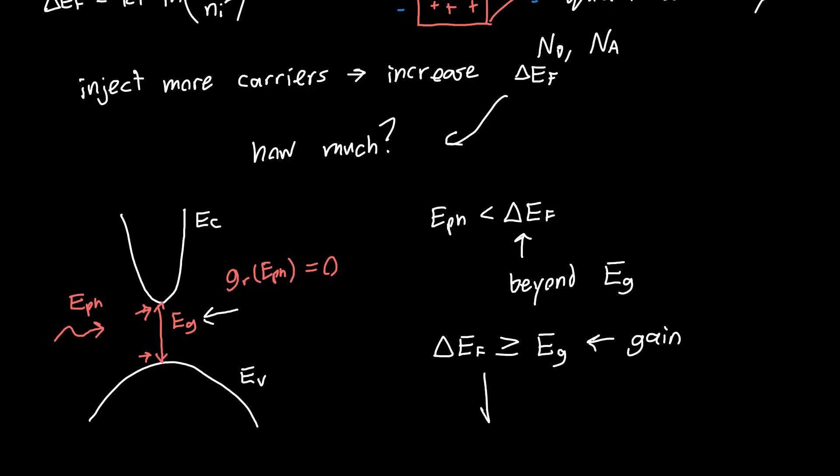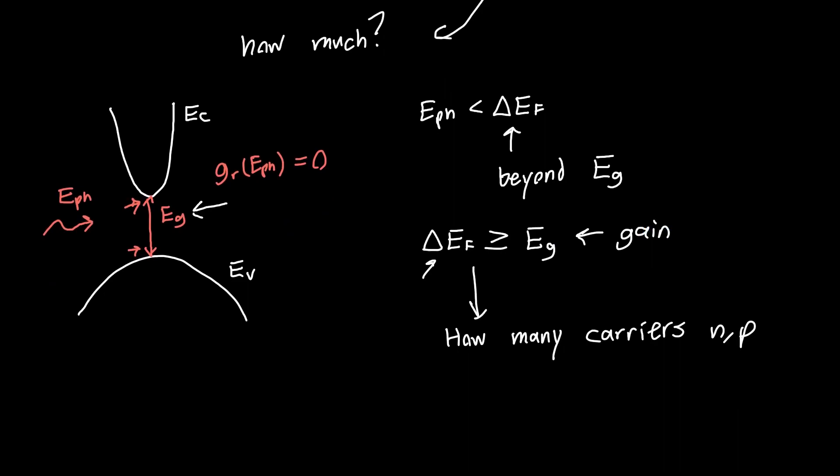And so now the question becomes, how many carriers does that require? So how many carriers N or P do we have to inject in order to achieve this condition? Delta EF has to be greater than or equal to EG. Or let's say at the minimum, delta EF has to be equal to EG. And we want to know the number of carriers required to do that. And that's called the transparency carrier density, NTR. And so now we want to figure out this quantity. How many carriers do we need to inject in order to get gain in our semiconductor? And this will be the subject of future videos.